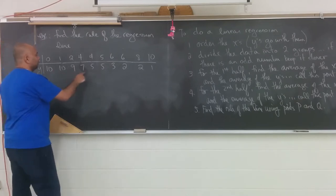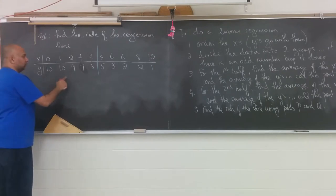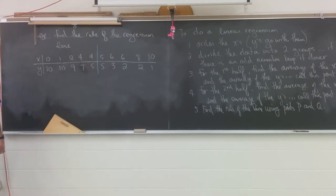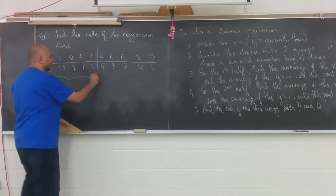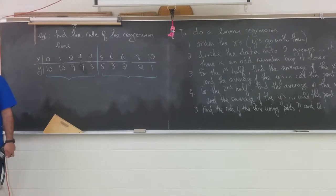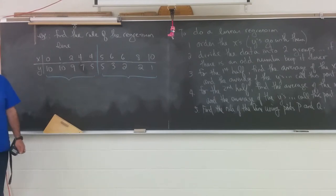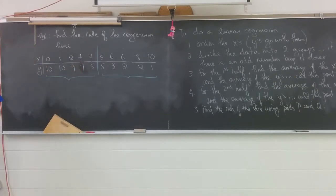Next: divide the data into two groups. We have 10 numbers — 5 and 5, so cut it in half. Here's group 1, here's group 2. I'm going to take all this and do a bunch of work over here for the first half, and over here for the second half. How you show this is irrelevant — just make sure it's clear. If there was an odd number, keep the cut closer together — I'll talk about that.